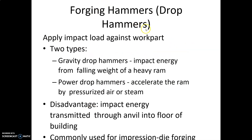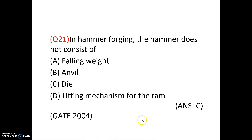Forging hammers (drop hammers) are of two types: gravity drop hammers, which derive impact energy from the falling weight of a heavy ram, and power drop hammers, which accelerate the ram by pressurized air or steam. A disadvantage is that impact energy is transmitted through the anvil into the floor of the building. The most commonly used forging type is impression die forging.